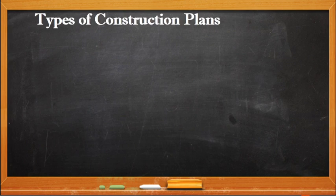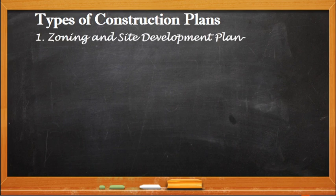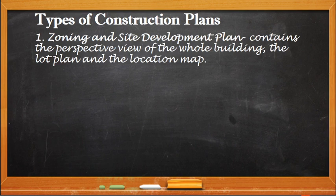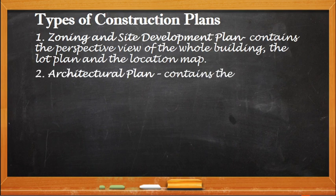Now we have the types of construction plans. If you are going to have construction works, we need to have the plans. Each part of a building will have its own plan, and each type of work that we are going to do must also have a plan or a detail drawing. First, we have the zoning and site plan — it will contain the perspective view of the whole building, the lot plan, and the location map.